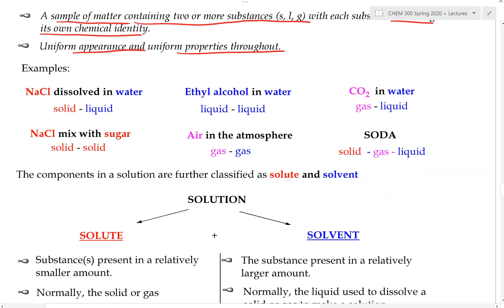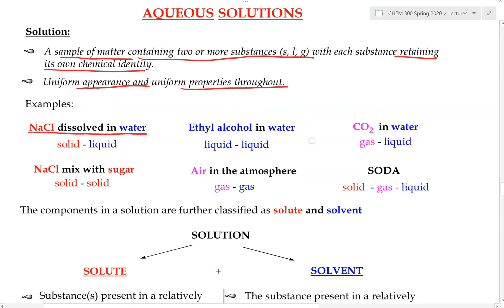Here are some other examples of aqueous solutions. Sodium chloride dissolved in water can be called an aqueous solution — I will go over the word 'aqueous' in a bit. A solution consists of two or more substances. The substances can either be a solid, a liquid, or a gas. We can have a liquid dissolve in a solid, or a gas dissolve in a liquid, or a gas dissolve in a gas — any of these physical states.